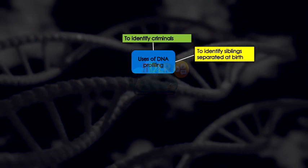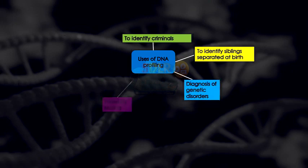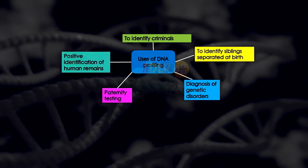Uses of DNA profiling: First, as we've done in the previous slide, it's used to identify criminals. Second, if siblings are lost at birth or separated, you're able to identify the siblings. Third, to diagnose genetic disorders. Fourth, paternity testing in families to identify the father. And also to use human remains at an accident scene or site to provide positive identification.